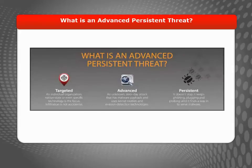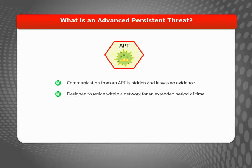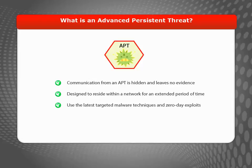An Advanced Persistent Threat, or APT, is a type of network attack that can put your networks and confidential data at risk. APT attacks are particularly dangerous because once they penetrate a network, they can remain undetected for a long time. Because APT attacks use the latest targeted malware techniques and zero-day exploits to infect networks, traditional signature-based scan techniques don't provide enough protection.